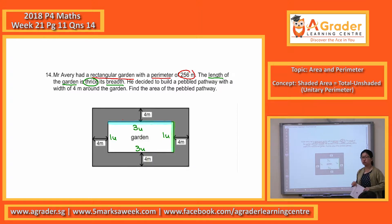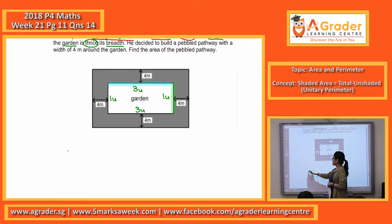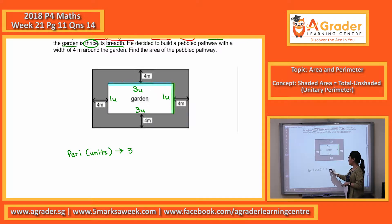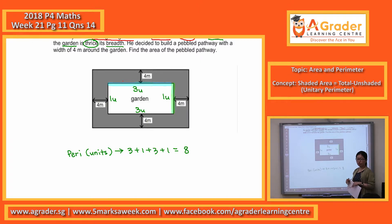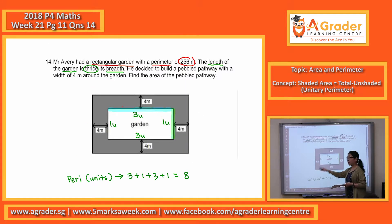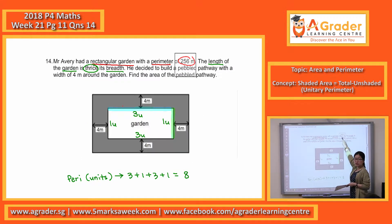What is the total in terms of units? Three plus three plus one plus one gives you a total of eight. So the perimeter in terms of units — 3, 3, 1, 1 — will give you a total of eight units. These eight units, which is the perimeter, will equal 256m.